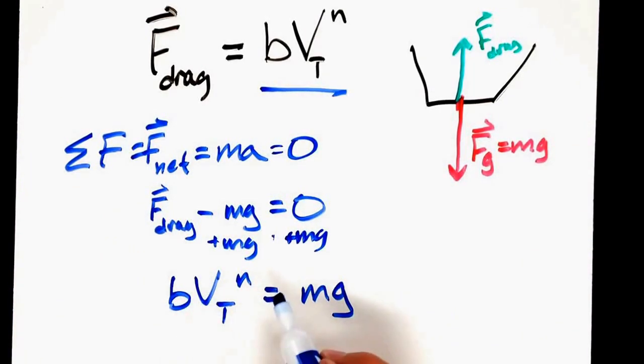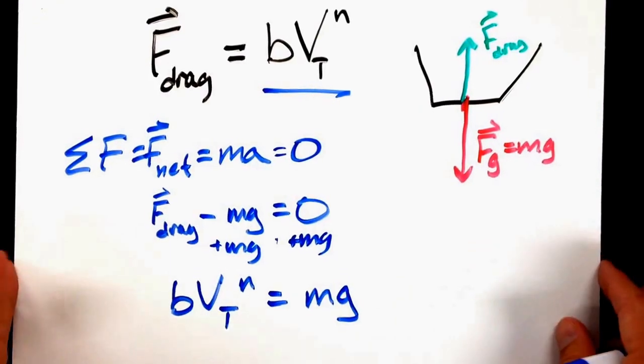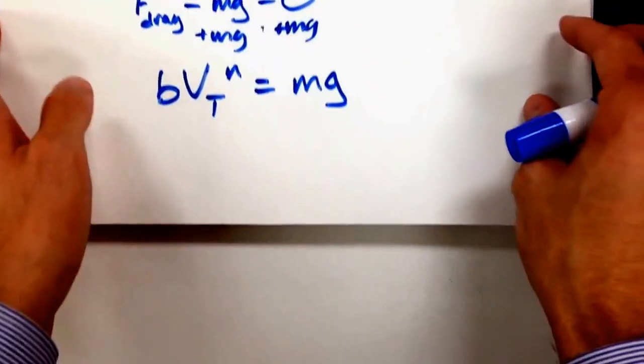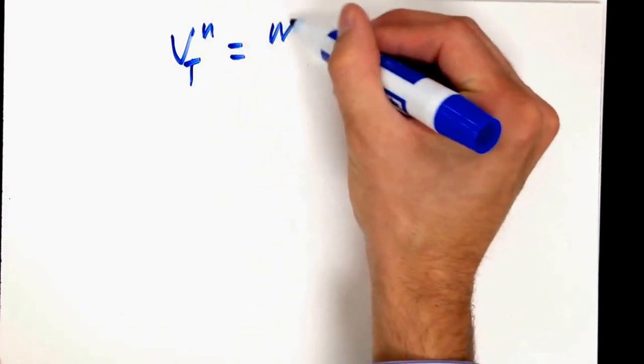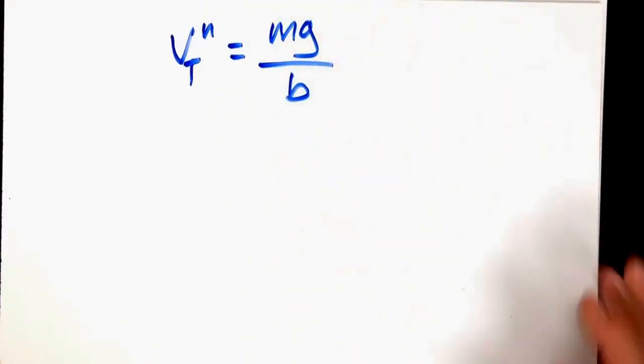I'm going to isolate V_T^n by dividing both sides by b. So I've got V_T to the n equals mg over b.